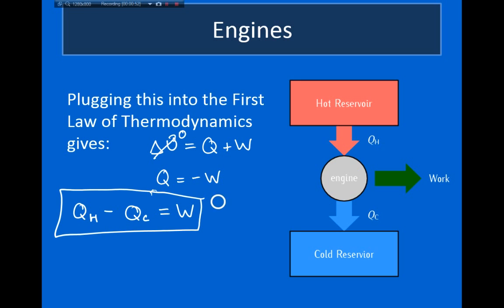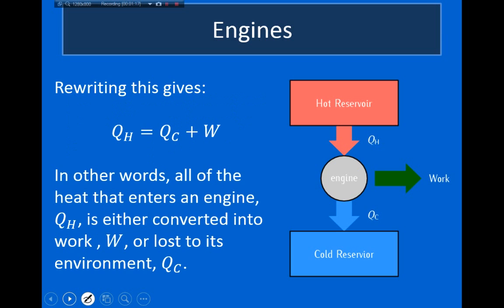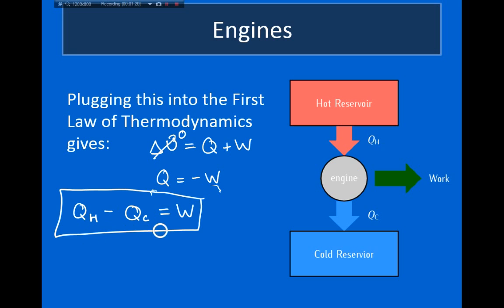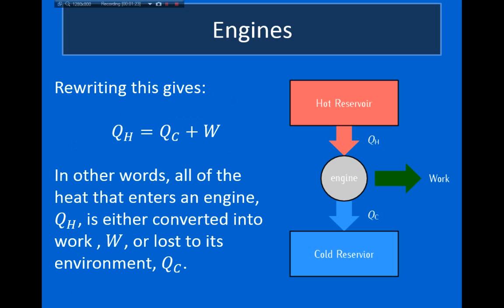You might notice that I changed the sign of work going from one line to the next. The reason is that when we talk about engines, we describe the work done by the engine as positive work. However, when the first law of thermodynamics was originally introduced, the opposite sign convention was used. This sign convention here is the one typically used by engineers. We can rewrite the equation as Q H equals Q C plus W, meaning the heat given to the engine is either converted into work or lost to the environment.